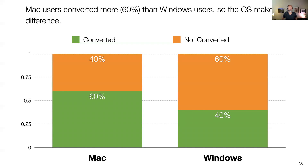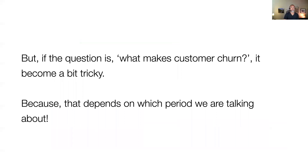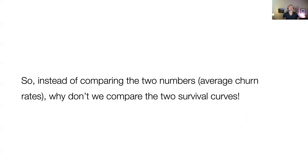It looks like we might want to look into Windows customers and see what is going on. That's a very simple answer. But if the question is what makes customers churn, that becomes tricky. Without the knowledge of this whole cohort analysis series, or if we didn't even know the survival curve, you'd think to bring that same bar chart and compare the churn rate. But obviously you've already known that the churn rate itself changes as time goes by. So it really depends — which period are we talking about? End of the third month or end of the sixth month? Things can be different. So instead of comparing two numbers, why don't we compare the two survival curves?